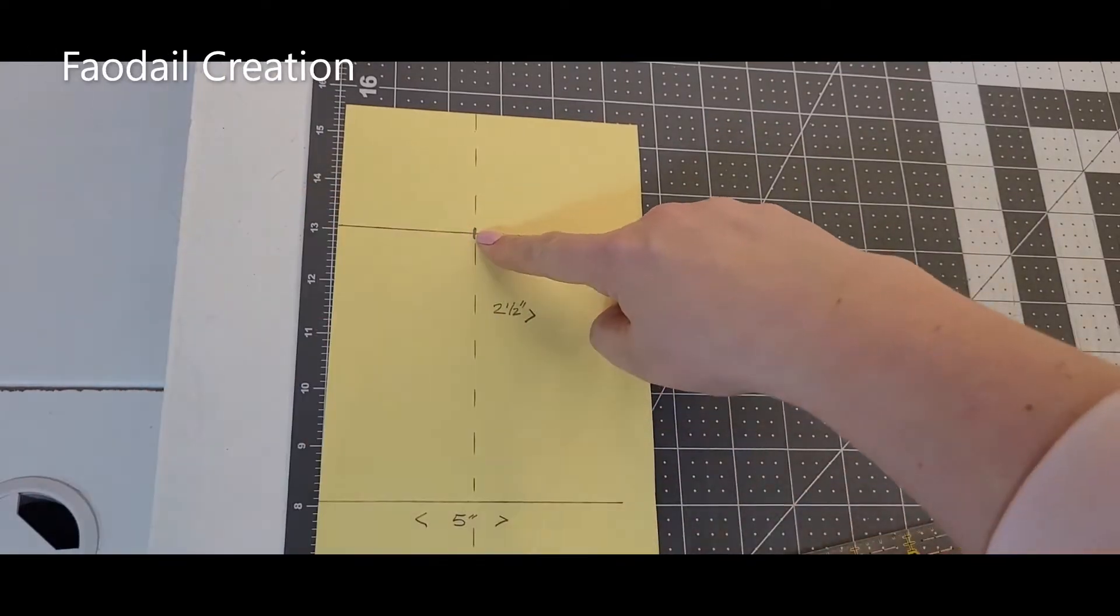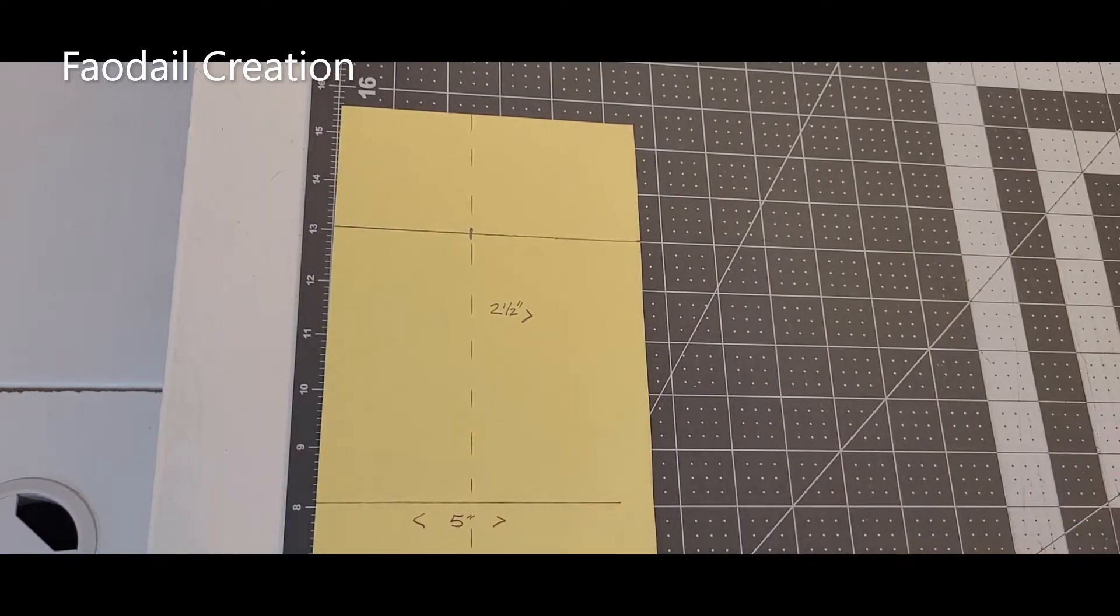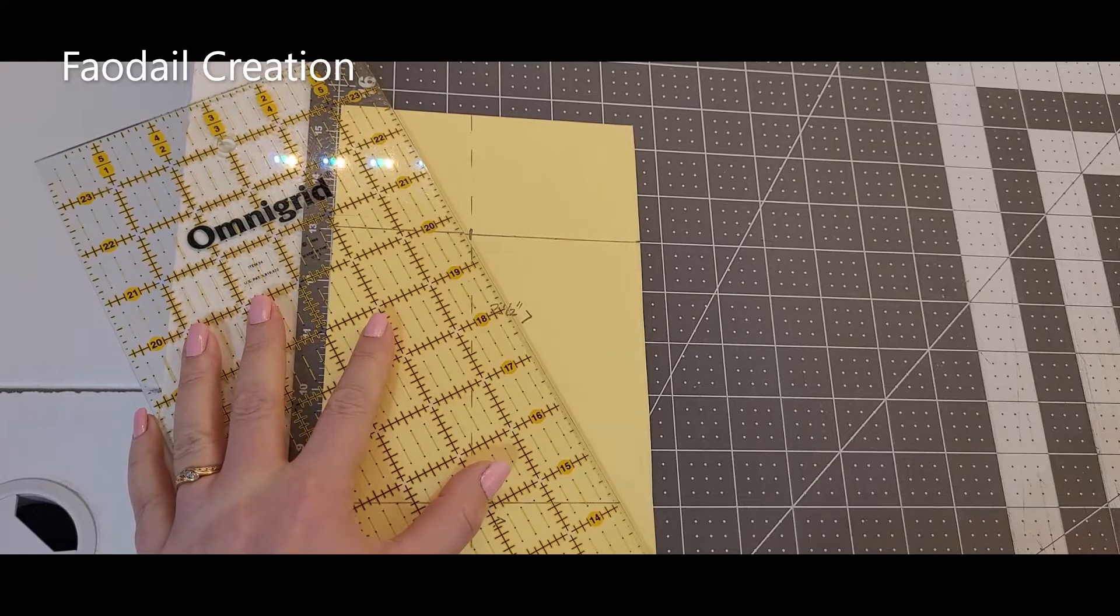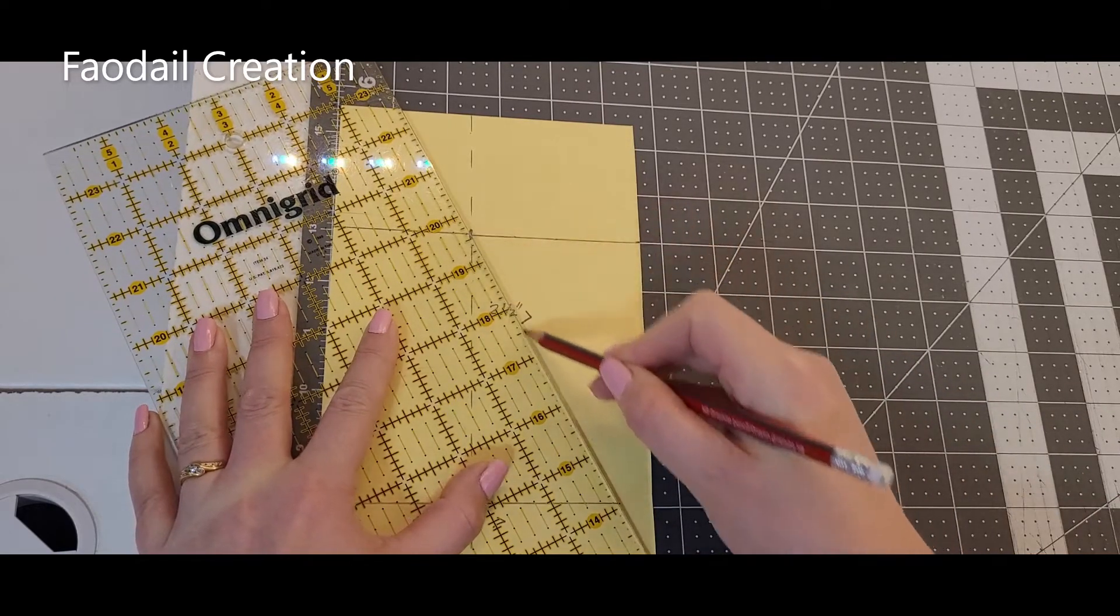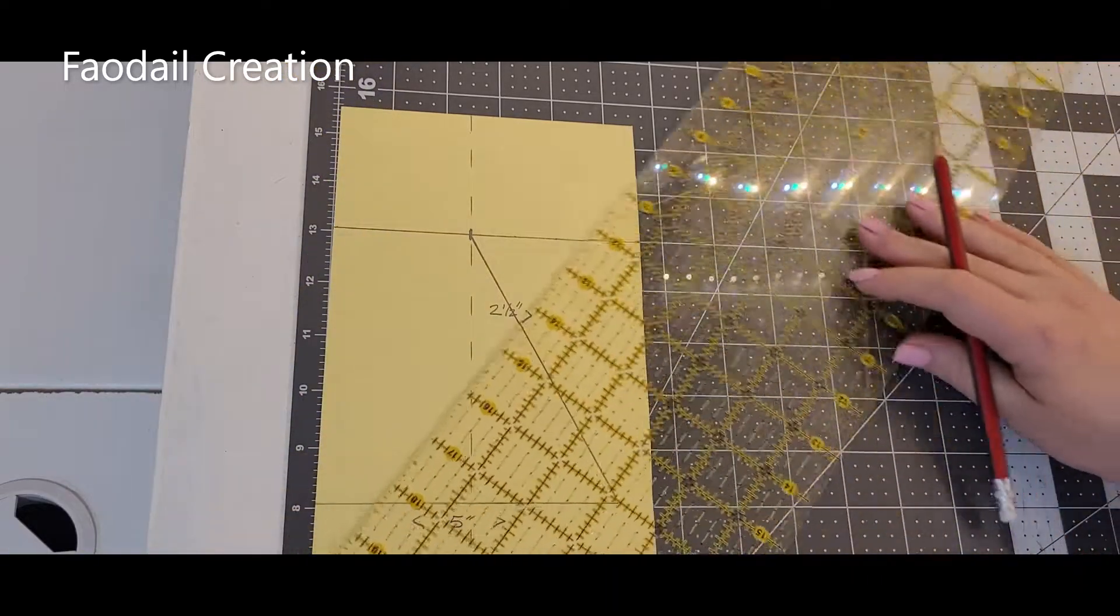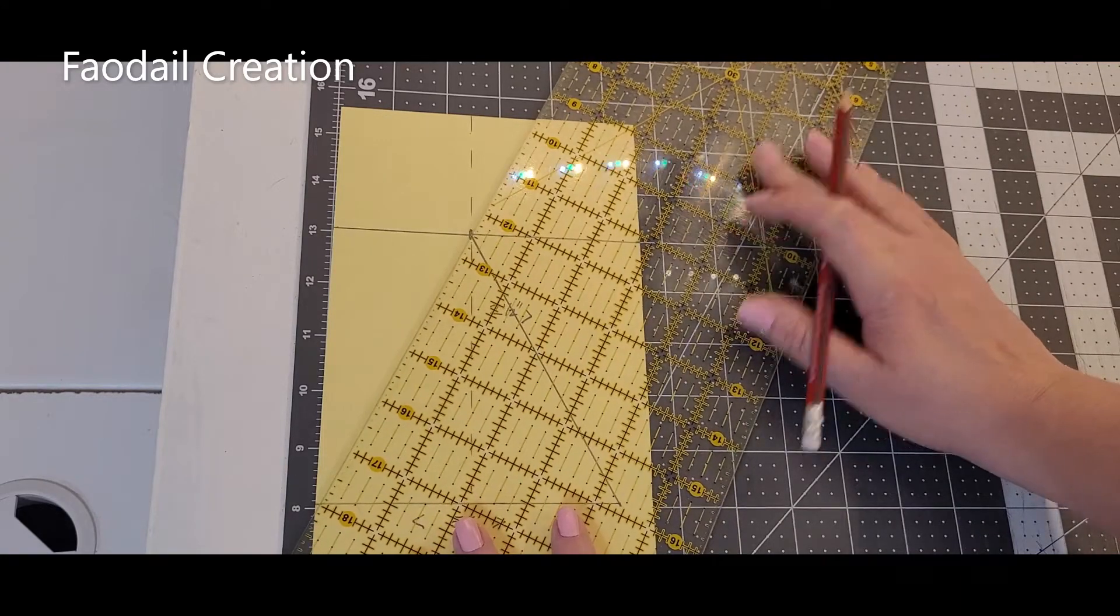Now from this center here to this end here, we're going to join it up. So you're going to get your ruler and you are going to join that corner up. And then from up here, you're going to join the other corner up.